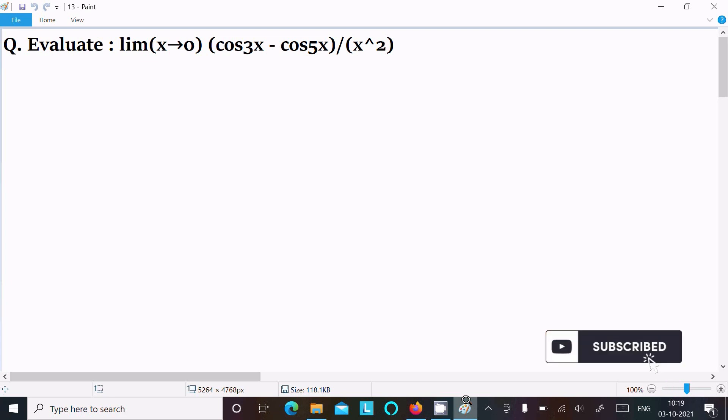I am going to evaluate limit x tends to 0 of cos 3x minus cos 5x divided by x squared. So let's see the answer. First, you are writing the given.